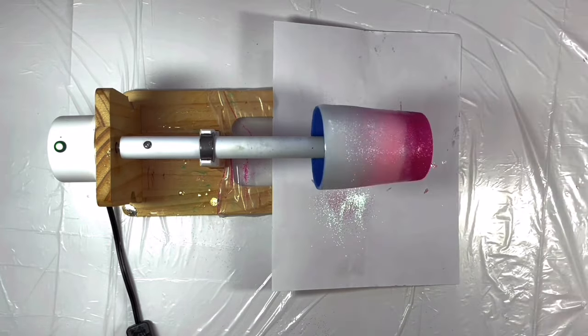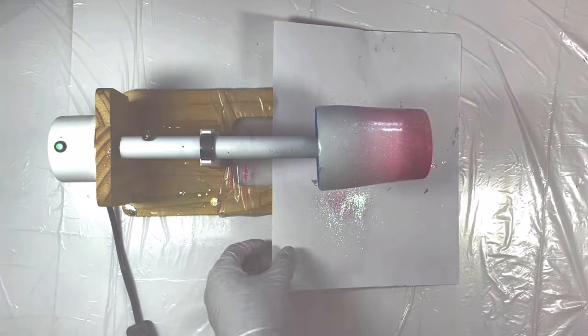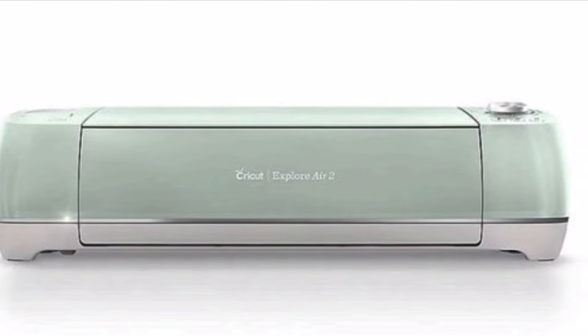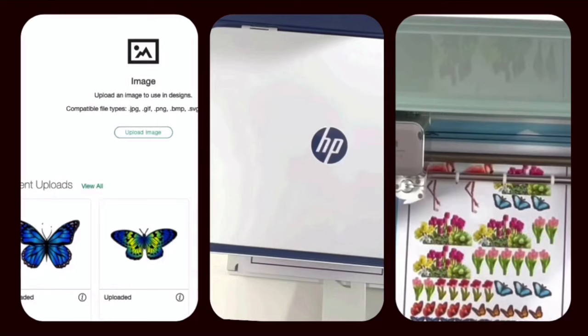And meanwhile, we will work on the digital part of the tumbler. For that, we need a printer, Cricut explorer machine and a laptop.